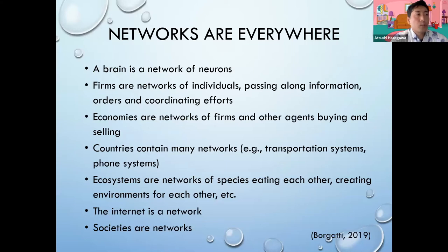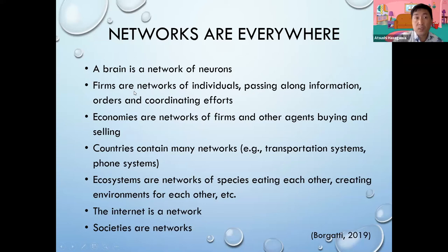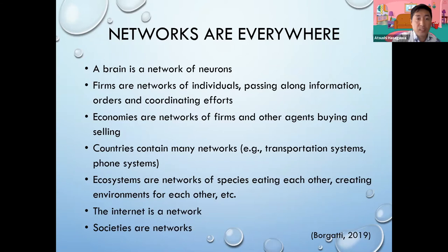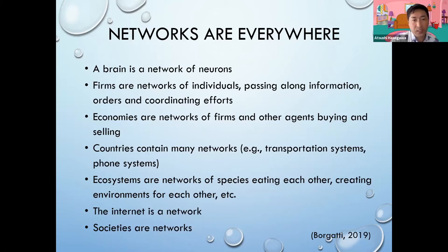Social networks are ubiquitous and can be found in many aspects of our lives. For example, a brain is a network of neurons, and firms are networks of individuals passing along information, orders, and coordinating efforts. Economies are networks of firms and other agents buying and selling. Countries contain many networks — transportation systems and phone systems. Ecosystems are networks of species eating each other, creating environments for each other, etc. And obviously the internet is a network.